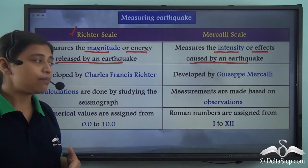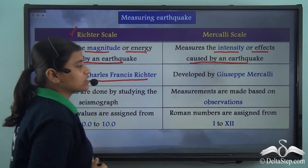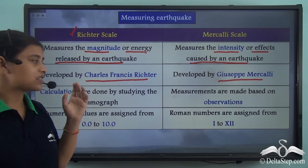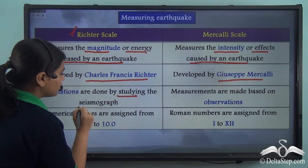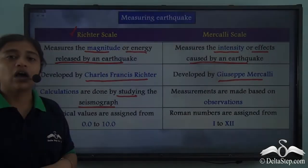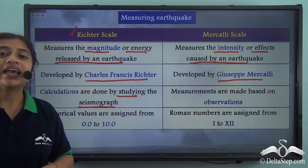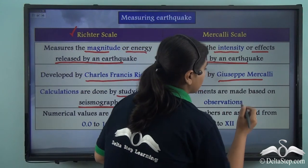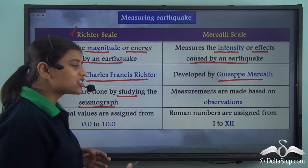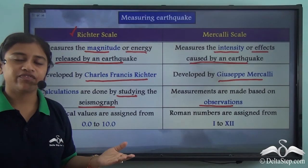The Richter scale was developed by Charles Francis Richter, and the Mercalli scale was developed by Giuseppe Mercalli. Calculations on the Richter scale are done by studying the seismograph, while the Mercalli scale measures intensity through observations — based on observations, we understand the effects of an earthquake.